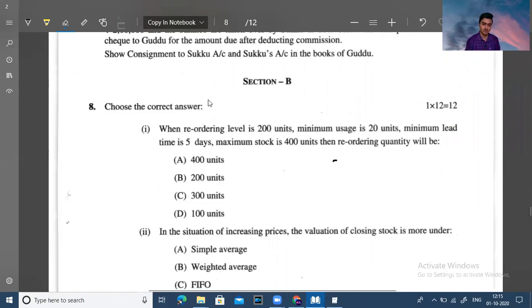Here, you can see the choice of the correct answer that we have. The first question is stock levels related. When a reordering level is 200 units, minimum usage is 20 units, minimum lead time is 5 days and maximum stock is 400 units, then the reorder quantity will be. So you have to get the reorder quantity.